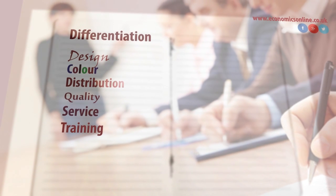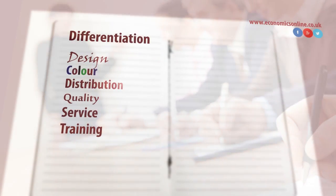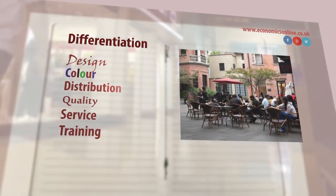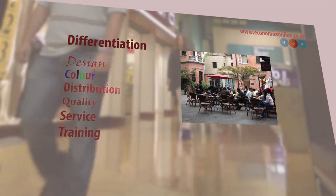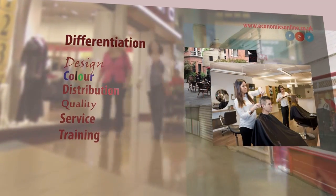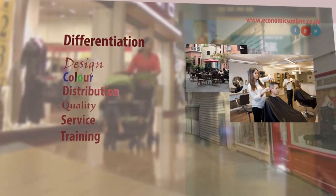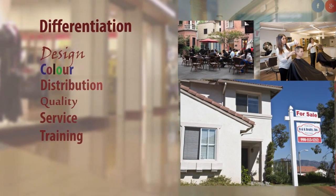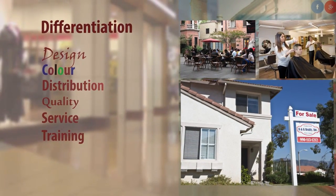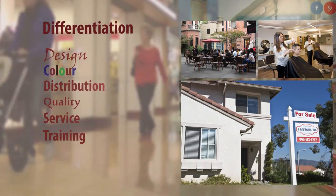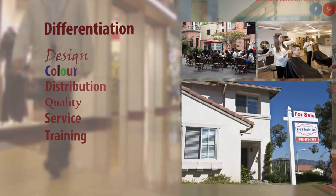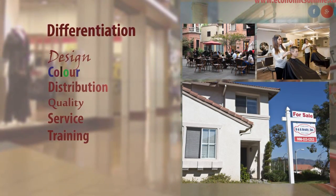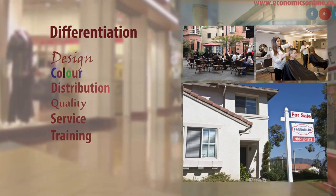Firms operating under monopolistic competition dominate the high street, with common examples including restaurants, hairdressers, estate agents, and independent stores.